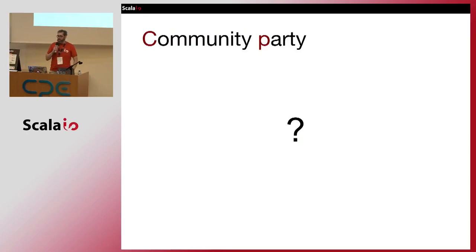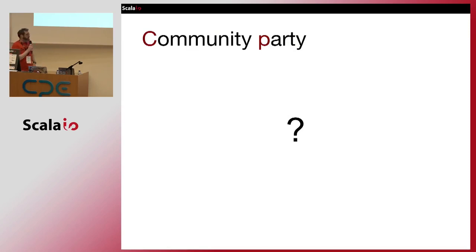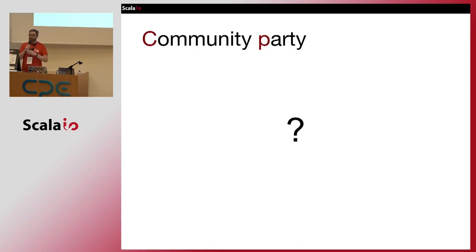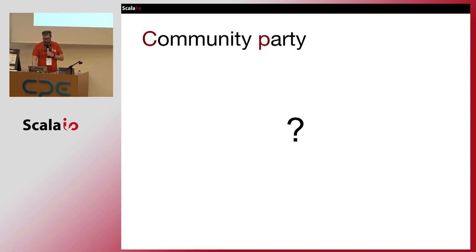About the community party, this year we have some issues with the organization. We are really sorry for that. We are trying to manage to find a solution for tonight, and we will keep you in touch during the day by email or by Twitter. So we are looking for a solution.